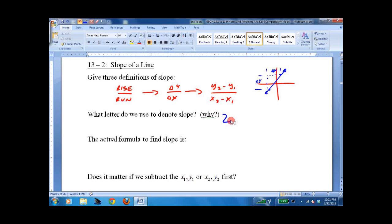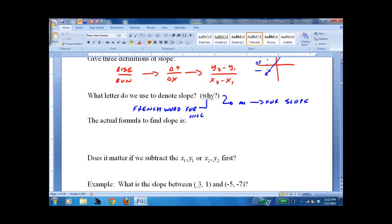We use the letter M. It's a great question, why? Look it up if you'd like. There's no definitive answer. Something that's from the French word for hill. But they really don't know. My two cents is that they're running out of letters. There's only so many letters they can use for things. They had to use something. M's as good as anything.